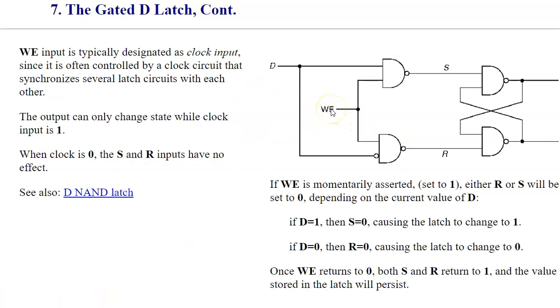Now Write Enable input is typically designed as a clock input since it is often controlled by a clock circuit that has to synchronize multiple latches or latch circuits with each other, which would allow us to construct multiple storage elements. So far this gated D latch represents storage of one bit of information. This is a one-bit memory implementation, and you can see that it has a reasonable way to control the state of this device by simply using the data input and the control input, which allows us to specify when exactly we want the new value to be remembered or written into this one-bit memory.